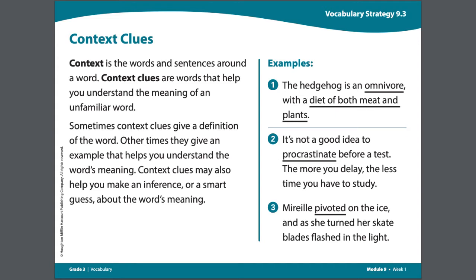However, we only have one sentence here, so let's see if any of the words in this sentence will give us some helpful clues. I see a clue in the sentence: "with a diet of both meat and plants." That tells me that the hedgehog, who is an omnivore, eats food that comes from more than one food source. So omnivore must mean that they eat many different types of food, specifically in the categories of meat and plants.